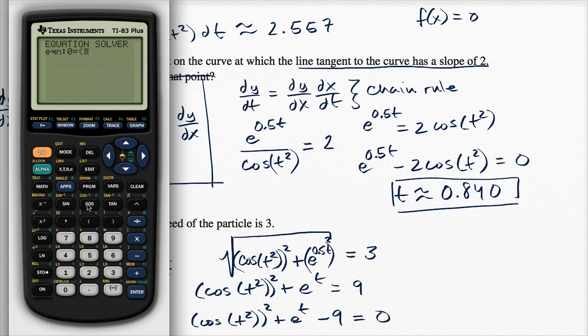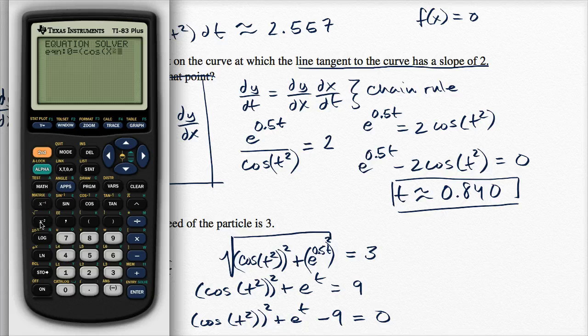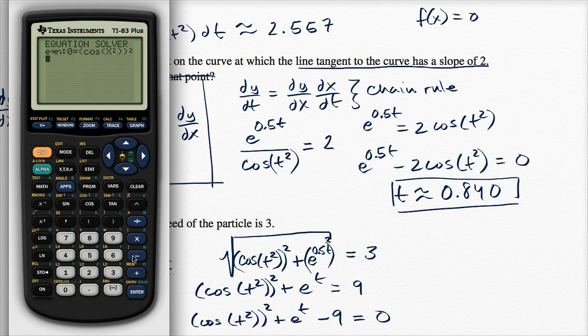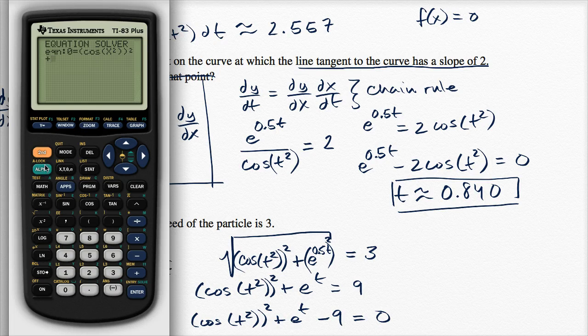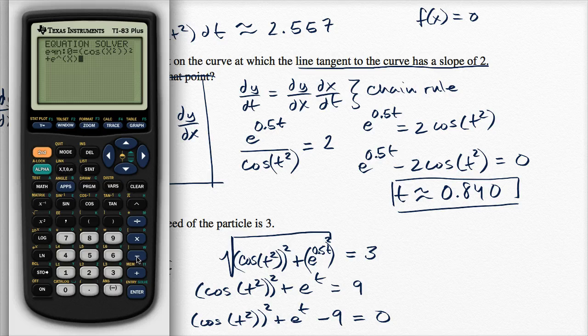All right, it's equal to cosine, and I'm gonna use X as my variable. Cosine of X squared, close that parentheses, and then I wanna square the cosine, the whole thing, plus E to the T, so second E to the, but my variable that I'm gonna solve for is X, I'm just replacing all the T's with X, just for inputting into the calculator. E to the X minus nine is equal to zero. We already have this set equal to zero.